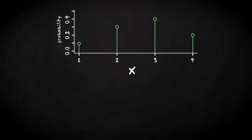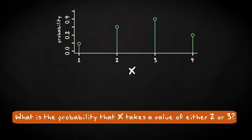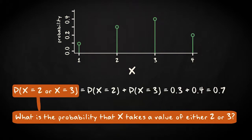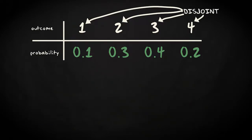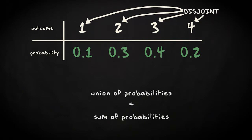Consider this simple discrete distribution. Can you answer the question: what is the probability that x takes a value of either 2 or 3? The answer is obtained by adding up the probabilities that x is 2 and x is 3, a union of the probabilities. So that is 0.7. All the probabilities listed in the table, or along the x-axis of the probability mass function, are disjoint. So any union of probabilities is simply the sum of these probability values.